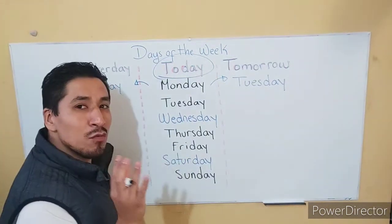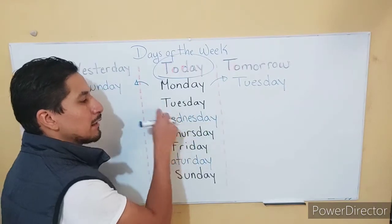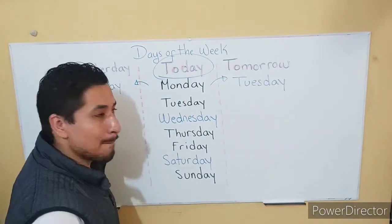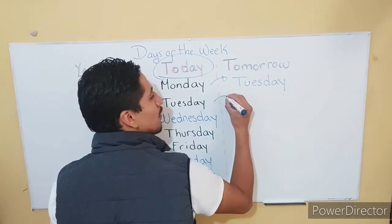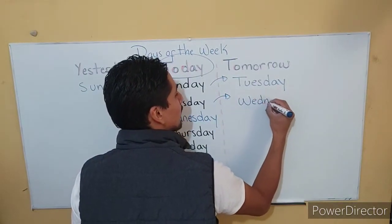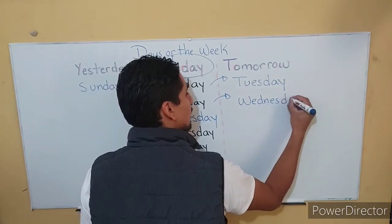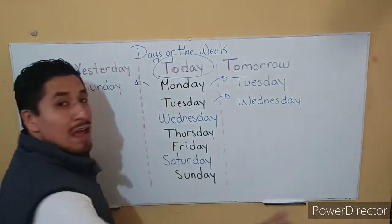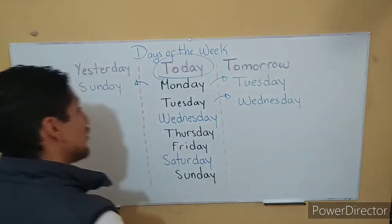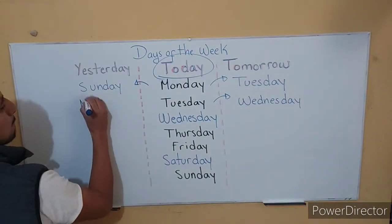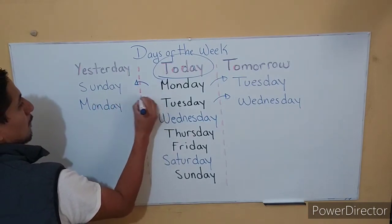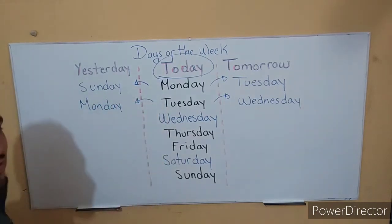So if today were Tuesday — si hoy fuera martes — tomorrow, ¿qué día sería? Very good. Wednesday. Tomorrow. And yesterday? Very good. Monday. Excellent. Very good.